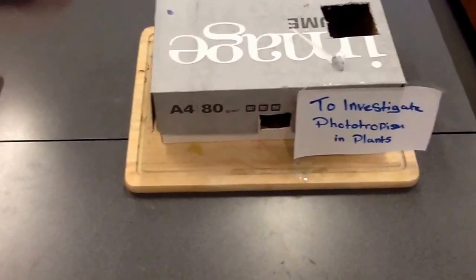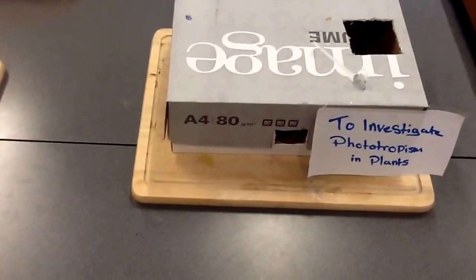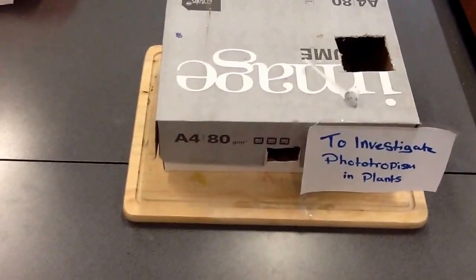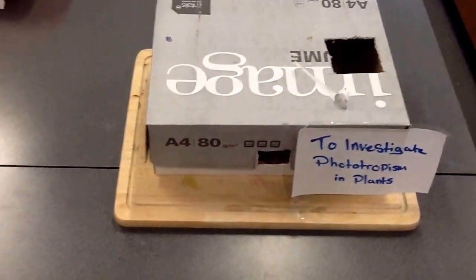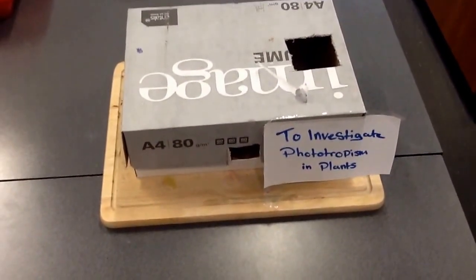Phototropism is the growth response of a plant towards light. Through the hole in the top of the box, in one compartment, the plants grew upright. In the other compartments, the plants bent at 90 degrees. Where there was no light, the plants just went yellow.